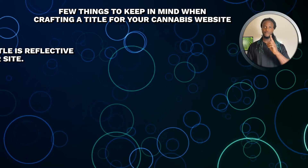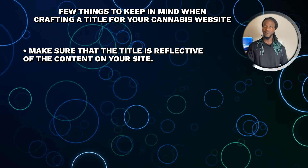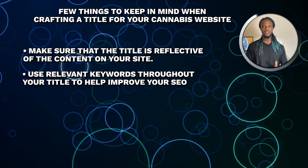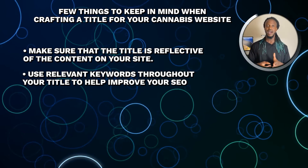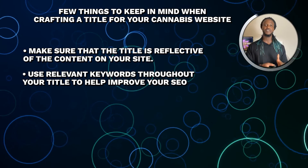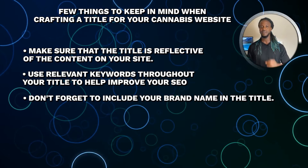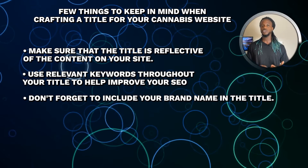There are a few things to keep in mind when crafting a title for your cannabis website. First, make sure that the title is reflective of the content of your website — if your site is about CBD oil, for example, then your title should mention CBD oil somewhere in it. Second, use relevant keywords throughout your title to help improve your SEO. Cannabis website designers can use keywords at the beginning of the title to help search engines recognize your website and rank you higher. Finally, don't forget to include your brand name in the title, as this helps create brand awareness and can serve as a call to action for potential visitors. By following these tips, you can ensure that your website title is optimized for better SEO and increased traffic.